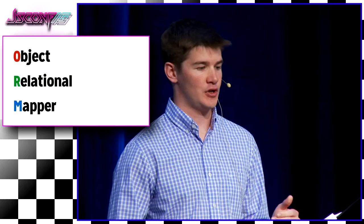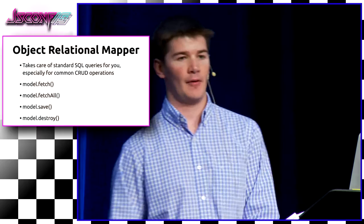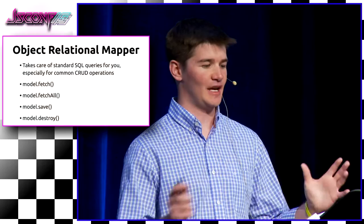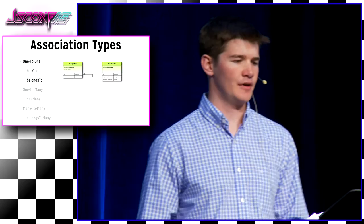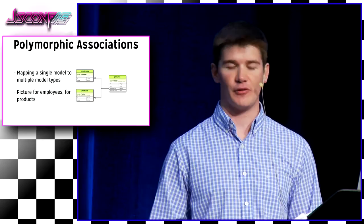That's pretty much a high-level overview of Knex. Now I'm going to jump into Bookshelf, which is an ORM — Object Relational Mapper. In short, it takes care of standard SQL queries for you, especially for common operations. When you're building an app, there's a lot of standard things like insert, return, fetch, save, dealing with relating different rows of data — and you don't want to have to write all of this by hand. The different association types are pretty familiar if you've worked with an ORM in another language: one-to-one, one-to-many, many-to-many. Polymorphic too, which I don't know if it's always a great idea, but sometimes it can be useful.